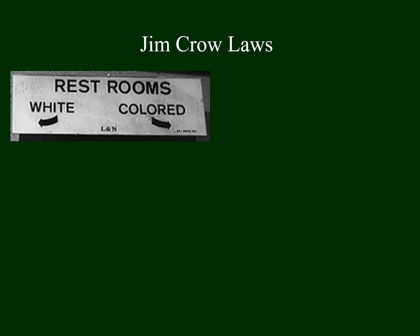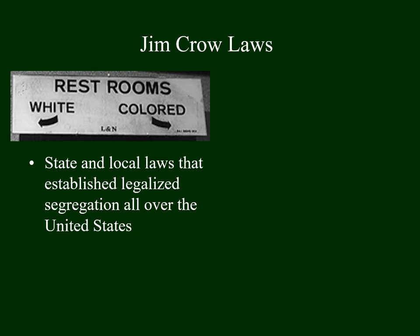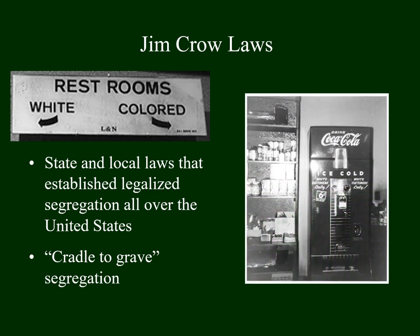Once the Supreme Court declared that it was legal to segregate based on race, state and local communities passed their own laws, often referred to as Jim Crow laws. These established segregation all over the country — restrooms, drinking fountains, schools, movie theaters, sports stadiums, and courtrooms were all segregated. People called this cradle-to-grave segregation because it began at birth with hospitals and didn't end with death, as even funeral parlors and cemeteries were segregated. Even pop machines were segregated.